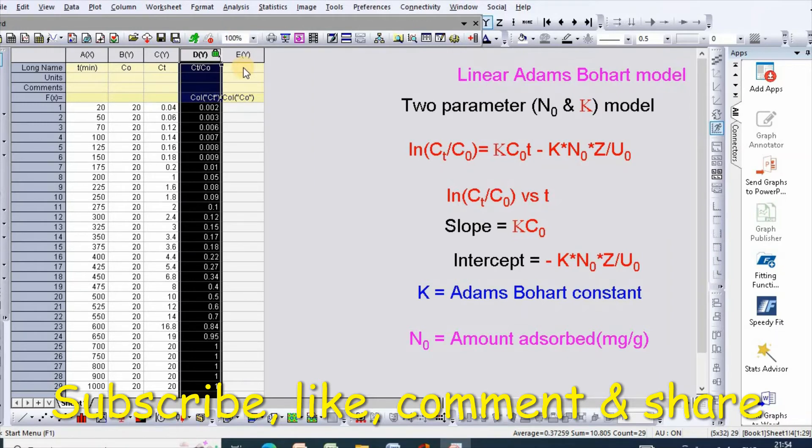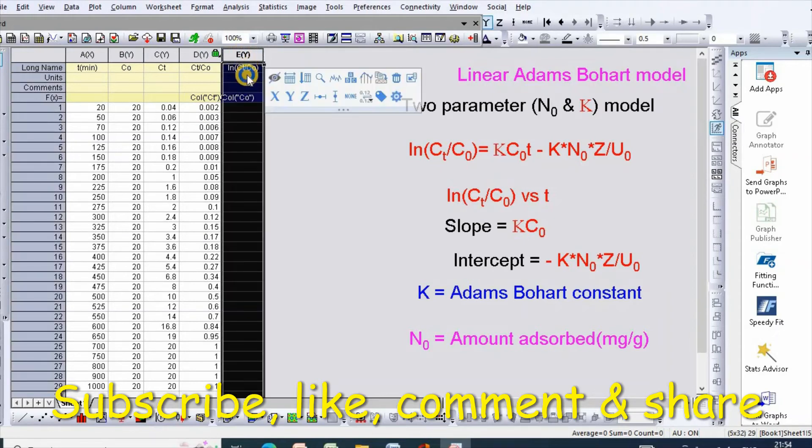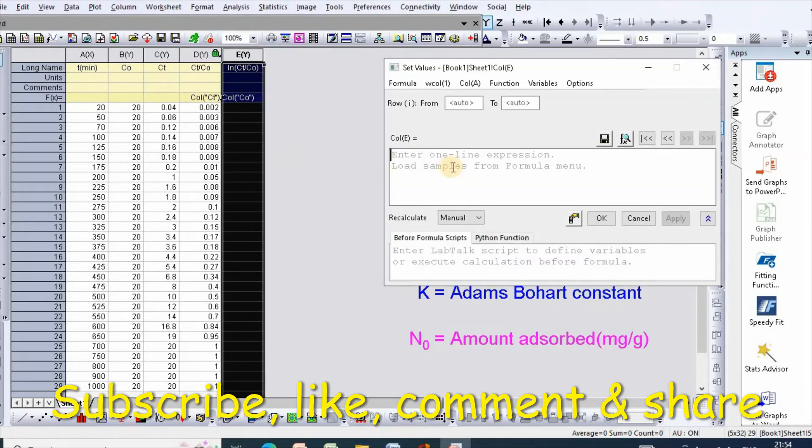Then you need to convert it to ln(Ct/C0). Just write ln(Ct/C0), then select and right-click and set column values equal to ln, and inside bracket you need to put column D.